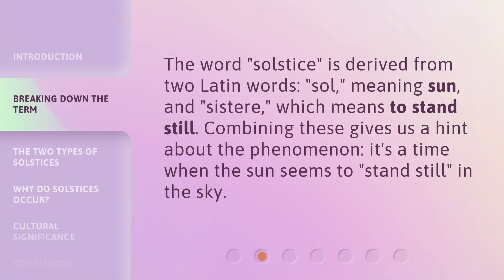The word solstice is derived from two Latin words: sol, meaning sun, and sistere, which means to stand still. Combining these gives us a hint about the phenomenon — it's a time when the sun seems to stand still in the sky.